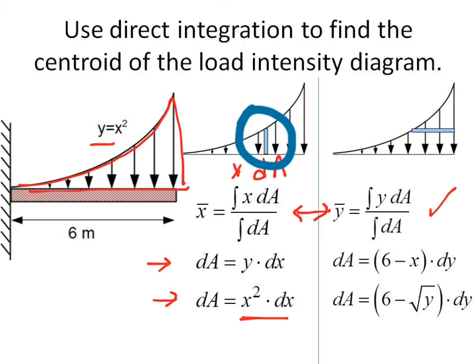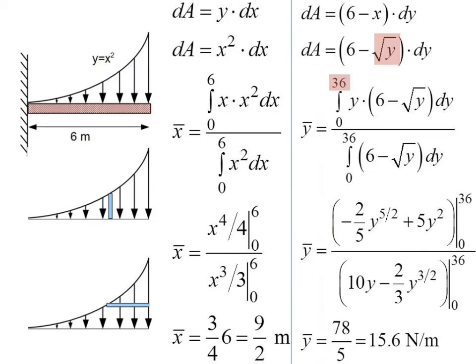When I find y bar, I'd like to use a horizontal element because I'm integrating y dA, and I can say dA is still base times height. Now if the base is bigger, the base is going to be 6 minus x, or I can solve that in terms of y. If I take dA as x squared dx and dA as 6 minus root y dy and plug them in, I can find what x bar and y bar are, where the centroid is for the load intensity diagram on the left.